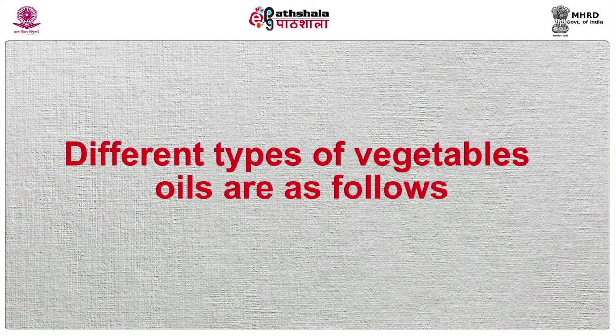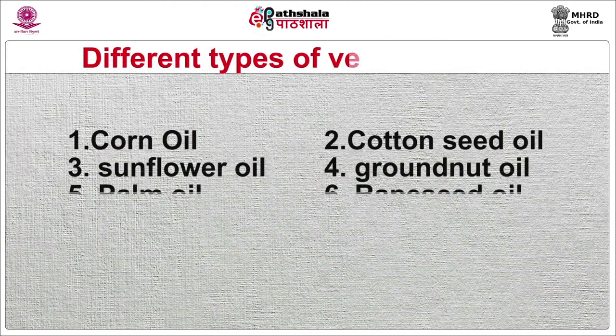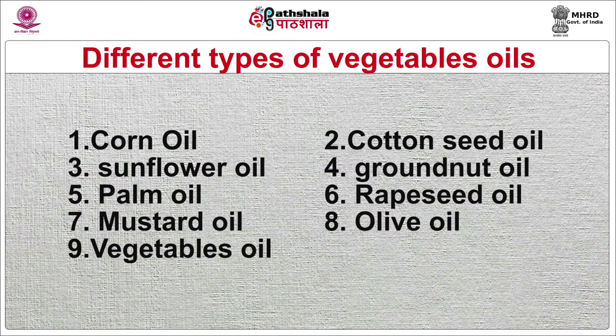Oils are liquid fats. They are often used as shortenings in baking because they spread through a batter or dough too thoroughly and shorten too much. Their usefulness is limited primarily to greasing pans, deep frying doughnuts, and serving as a wash for some kinds of rolls. Different types of vegetable oils include corn oil, cottonseed oil, sunflower oil, groundnut oil, palm oil, rapeseed oil, mustard oil, olive oil and vegetable oil.